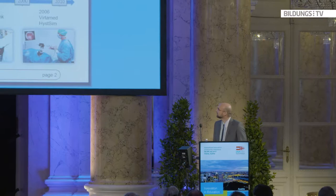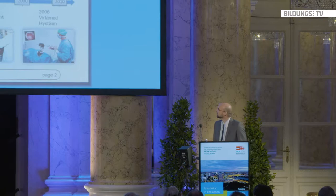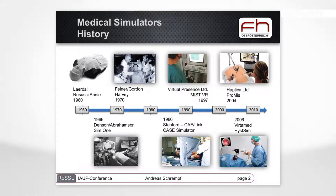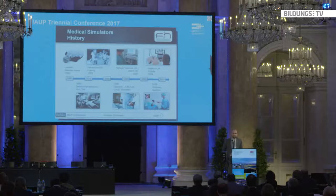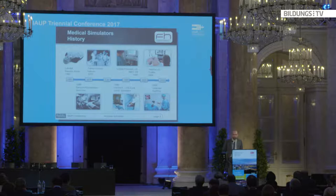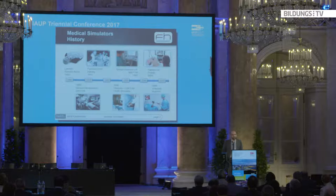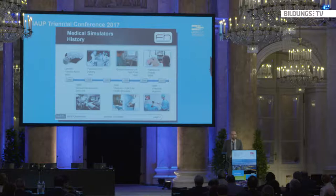Let me give a short history of medical simulation. Everything starts at 1960 where Laerdal developed the mannequin basically designed for ventilation. From that time, two full mannequin simulators were developed: one by Denson and Abrahamson called Sim 1 in 1966, and one by Gordon and Felner called Harvey in 1970. These were full-scale mannequins where you could measure ECG and observe breathing.